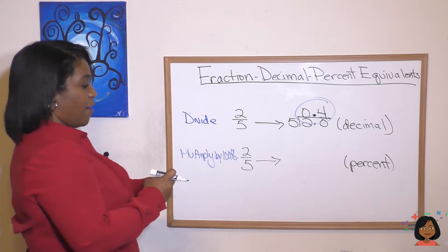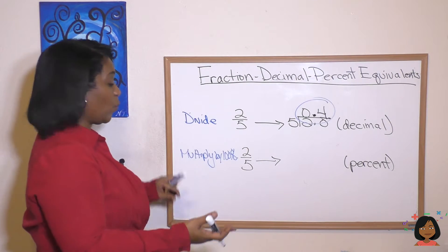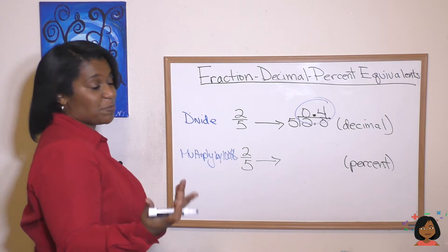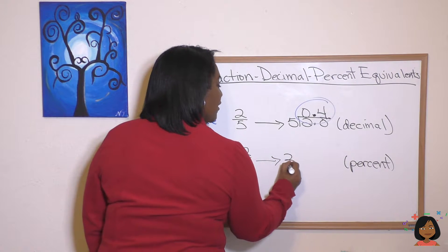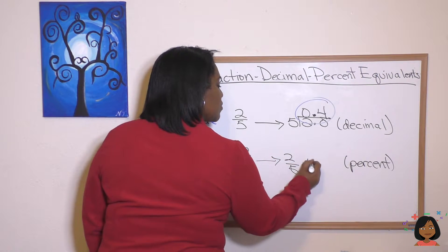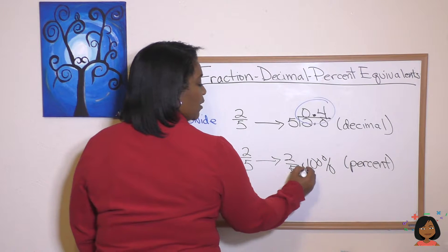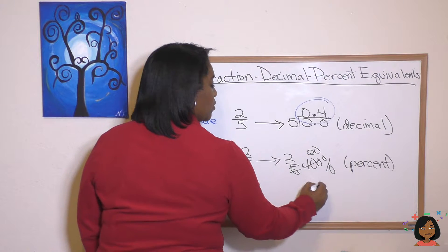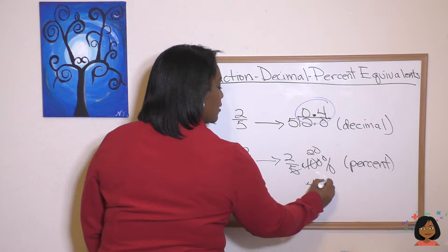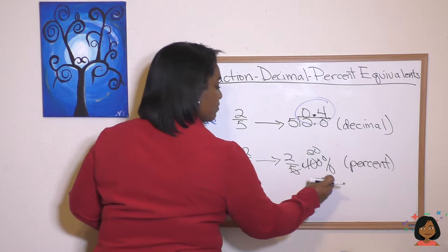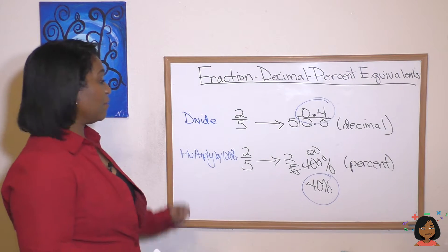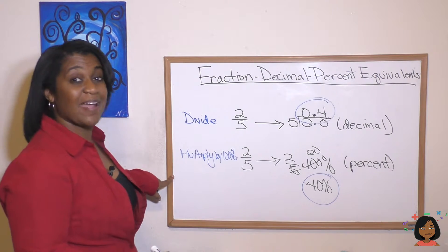And to get from a fraction to a percent we multiply by 100 percent. So we have two-fifths times 100 percent. And we can cross out which gives us 40 percent. Okay that simple. Divide and multiply by 100 percent.